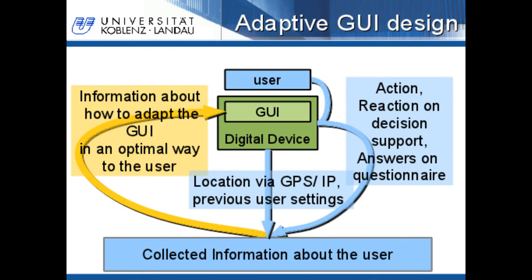Adaptive graphical user interface design works as follows. It is based on collected information about the user. The digital device delivers information about the location of the user by GPS or IP, and about the previous user settings. The user delivers information by his actions, his reaction on the decision support, and his answers to certain questions. Afterwards, information about how to adapt the graphical user interface in an optimal way to the user is delivered to the digital device.